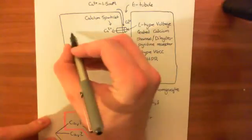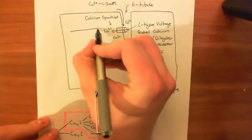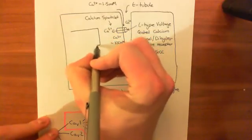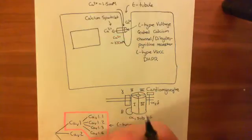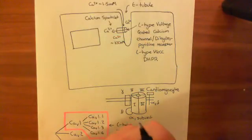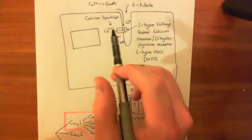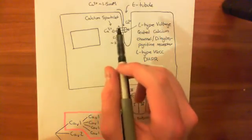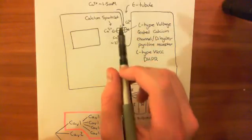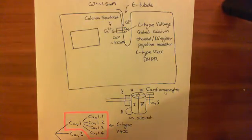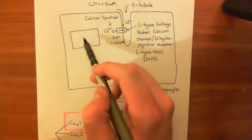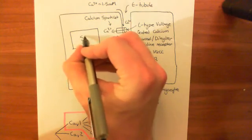The rise in calcium around an L-type voltage-gated calcium channel is what is known as a calcium sparklet. It does not cause contraction of the cardiomyocyte — it is not large enough for that. Instead, its role is to cause a release of calcium from the sarcoplasmic reticulum, which will then produce a much larger rise in calcium that causes contraction of the muscle.